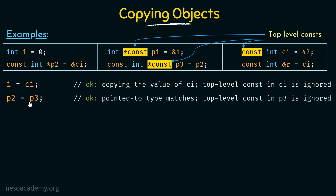Next, p2 = p3. p2 is a simple pointer to constant integers, while p3 is a constant pointer to constant integers. Will we be able to copy p3 to p2? Again, the top-level constant in p3 is ignored while copying. So it looks like const int* p3, and here const int* p2 — the pointed-to types match as const int. So this copy is also valid.